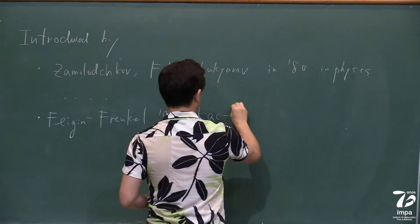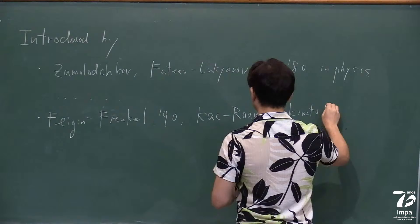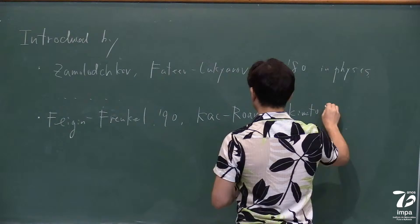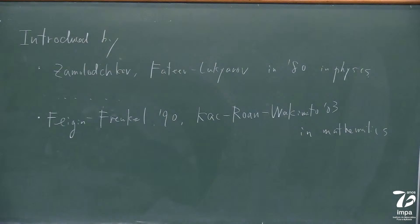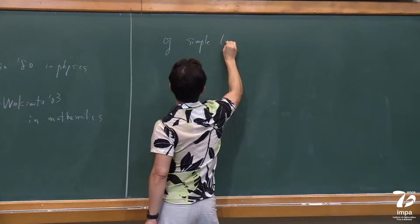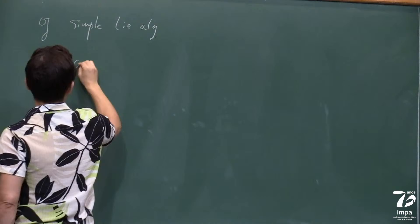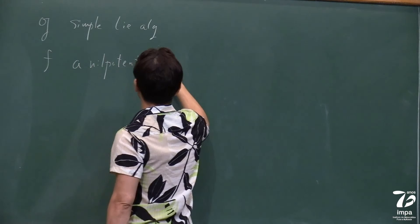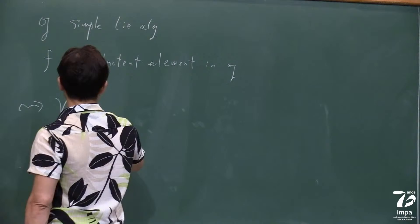And also in the most general setting, it was Kac-Roan-Wakimoto who defined W-algebras. So what are the W-algebras? If you have a simple Lie algebra and a nilpotent element, you can define a one-parameter family of a vertex algebra called W-algebras.